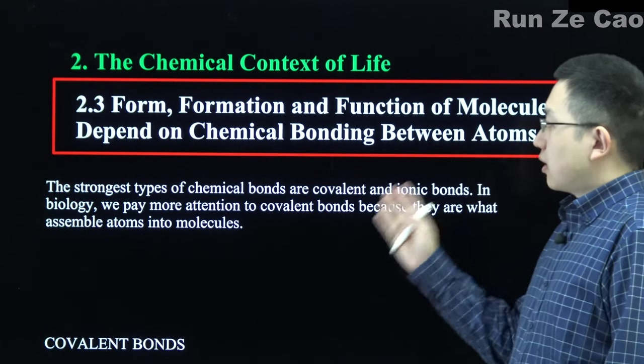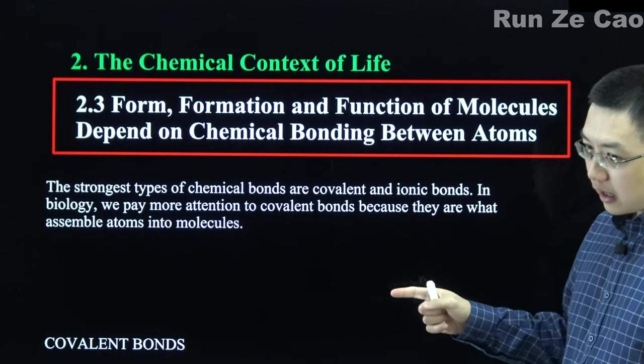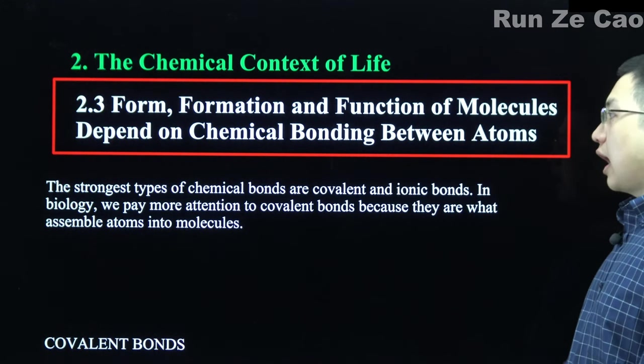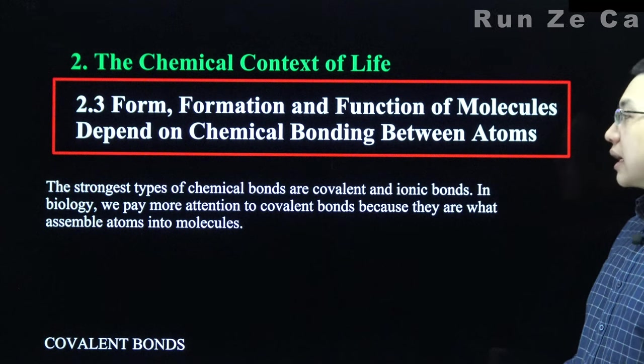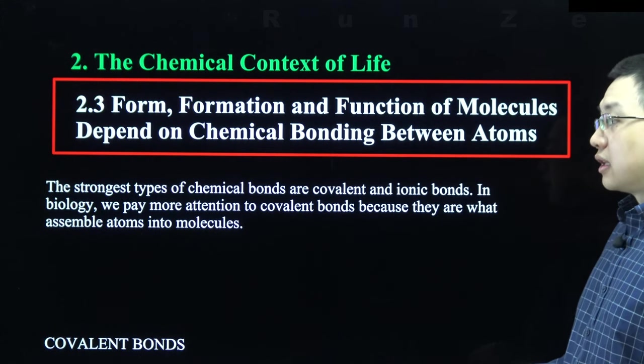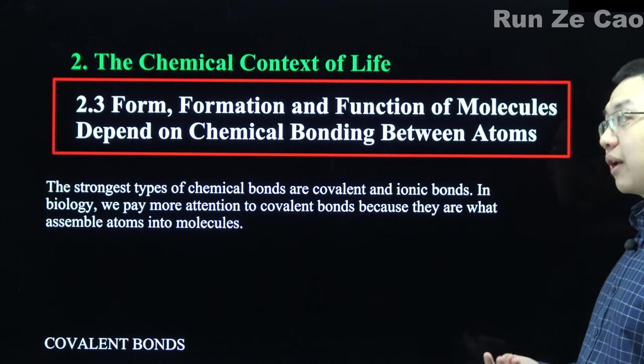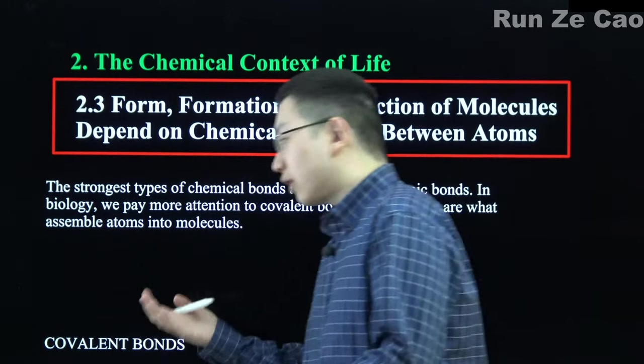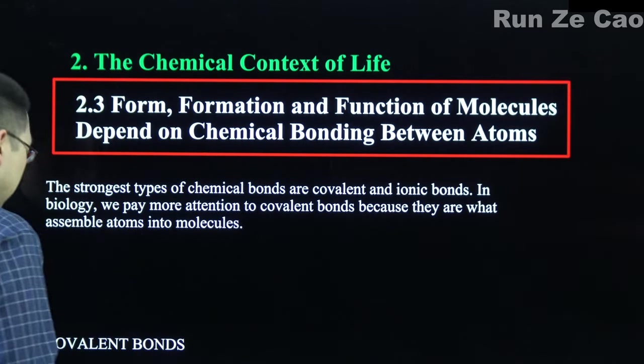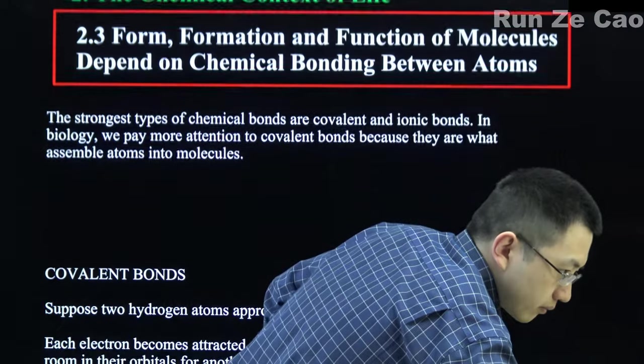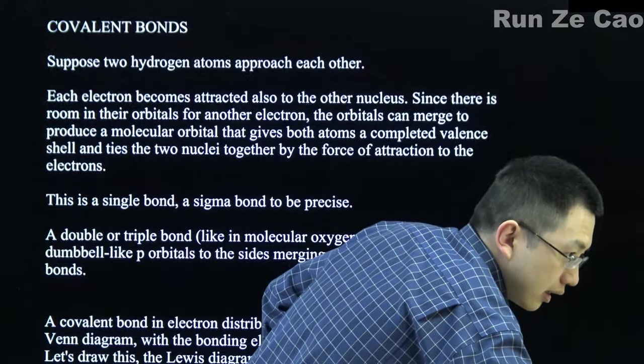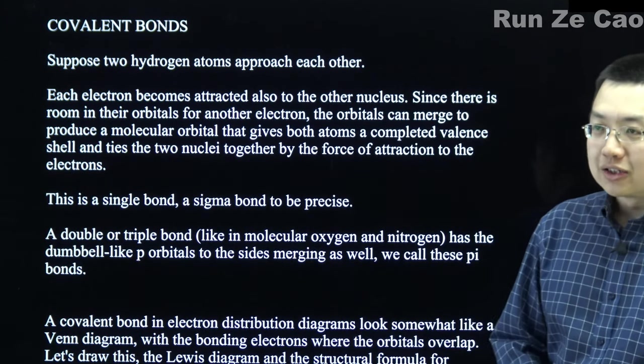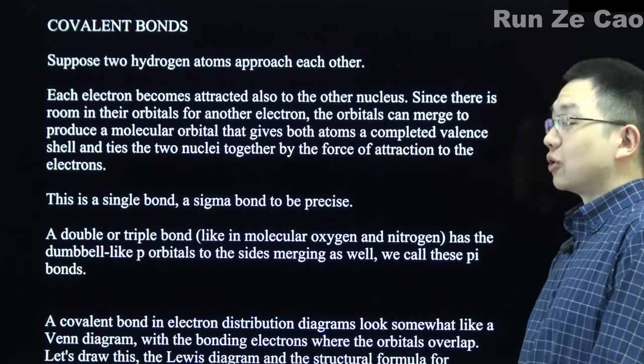The strongest types of chemical bonds are covalent and ionic bonds. There are some ionic bonds stronger than some covalent bonds and vice versa. In biology, because covalent bonds are important for assembling atoms into molecules or polyatomic ions, we generally focus more on covalent bonds. There's a reason molecular biology is a field - molecules are just so important.